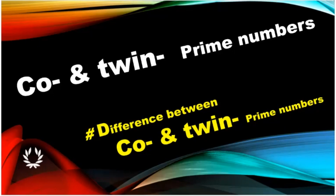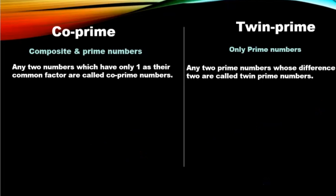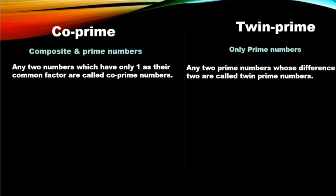In co-prime numbers, both composite numbers and prime numbers are there. But in twin prime numbers, only prime numbers are used.